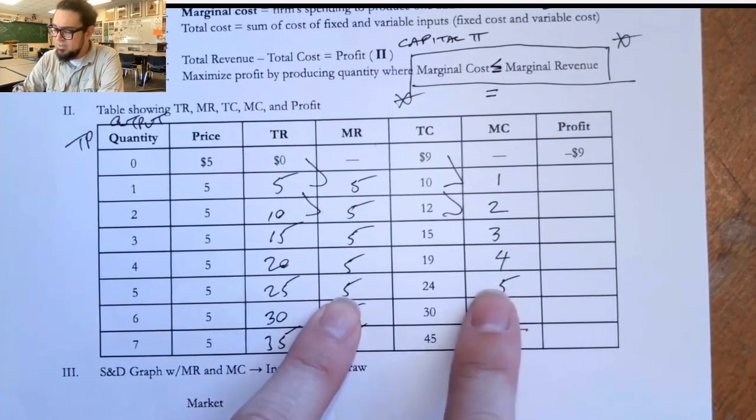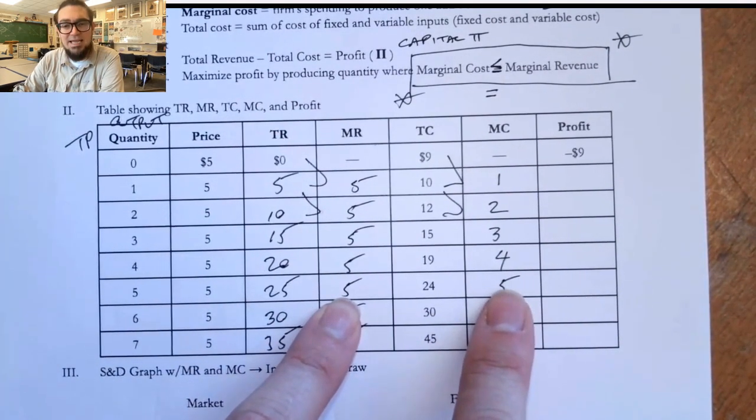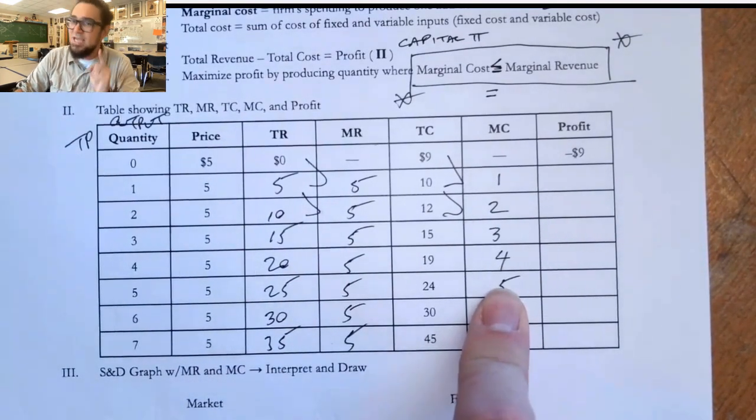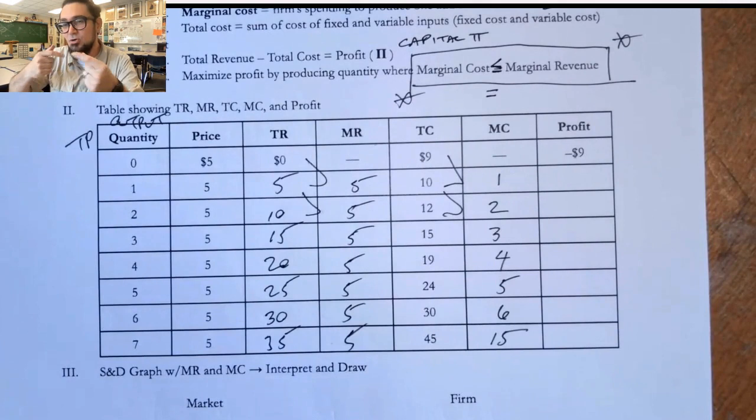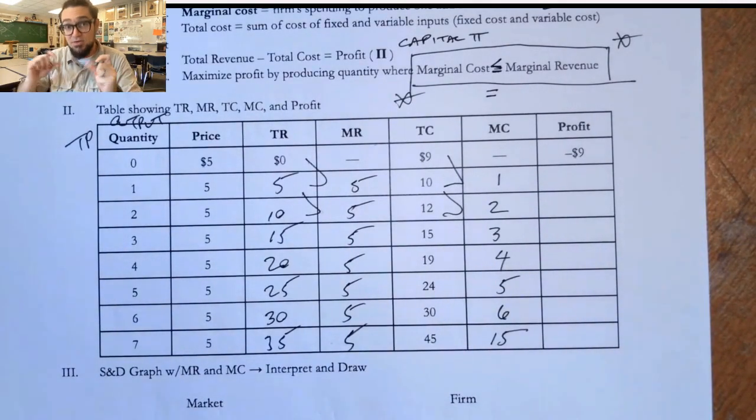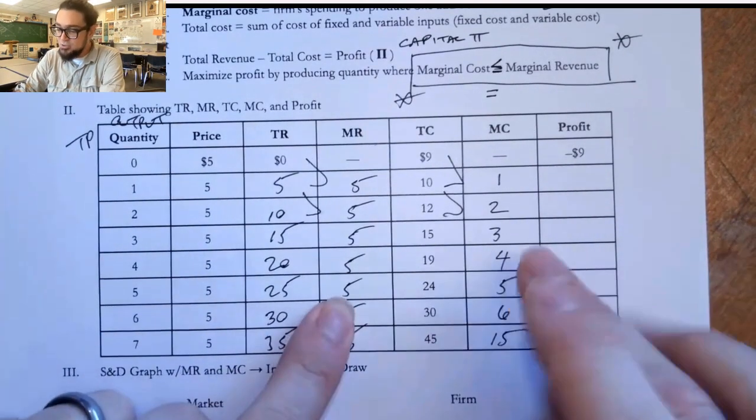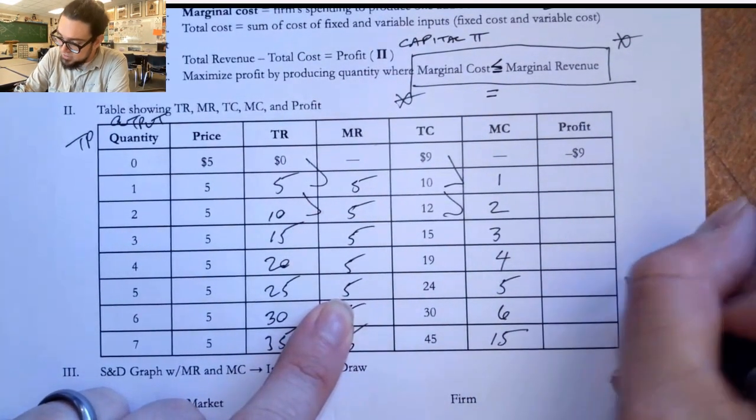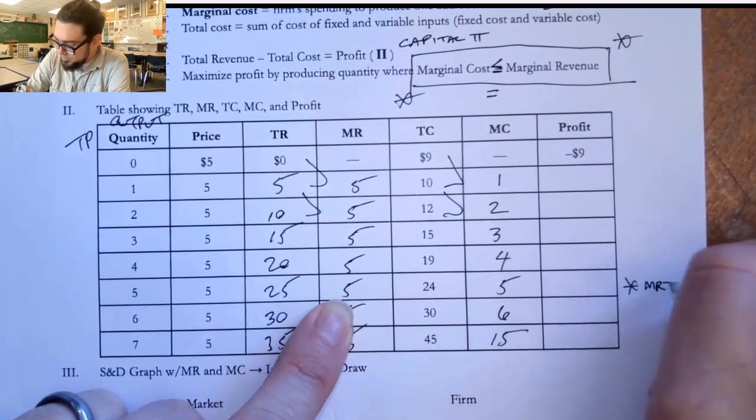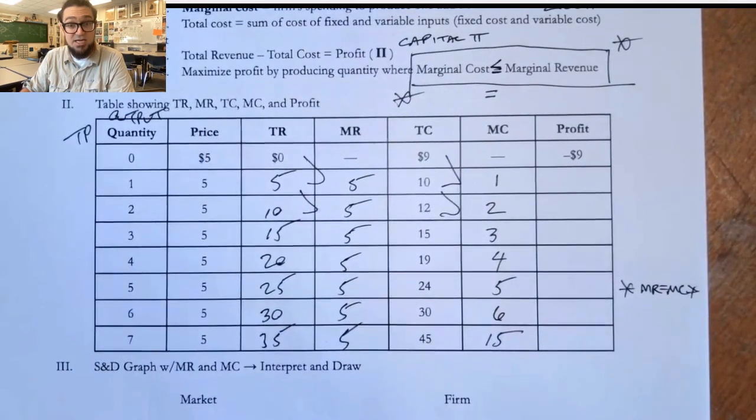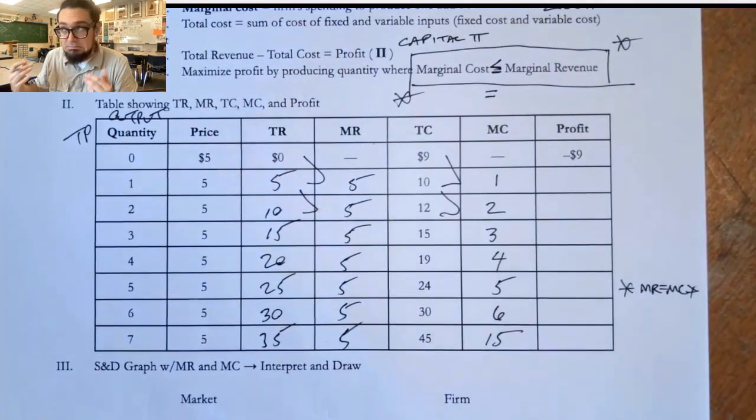And you might be looking at this and going, how can that be? How could I actually be gaining if the marginal cost, the marginal revenue, the fifth unit is the same? What's actually happening is the gain is occurring as you're moving from the fourth to the fifth unit. And so actually there is some profit to be made as you continue to produce up until where MR equals MC. So we're going to put a star next to this one. MR equals MC. And we're going to calculate these profit columns and see if it actually holds true. Hopefully it does. Fingers crossed.